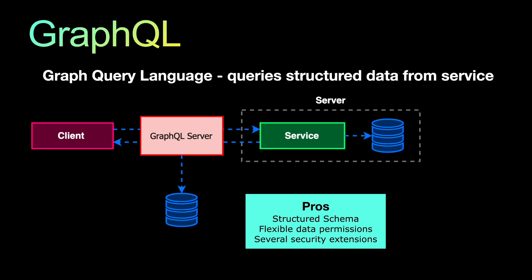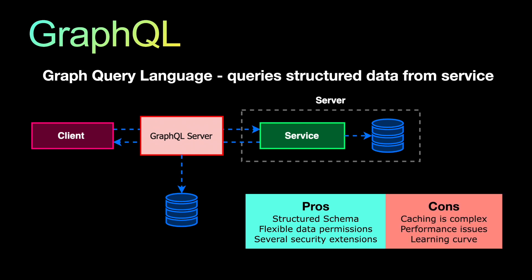There are certain cons of GraphQL: caching is complex — you have to build a custom caching layer. There are performance issues at times. There is also a huge learning curve, because compared to REST, SOAP, and RPC which have been around for decades, GraphQL is very new — less than a decade old, about five to seven years. It was actually developed by Facebook. Companies generally don't spend time to learn it unless people already know and are aware of how GraphQL operates.